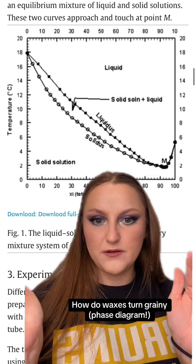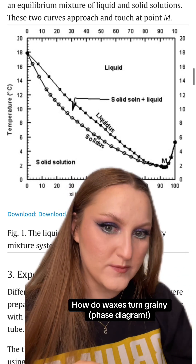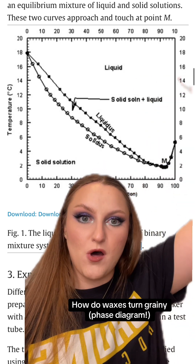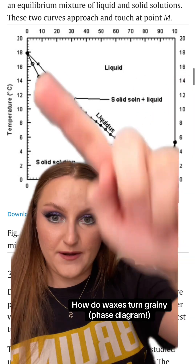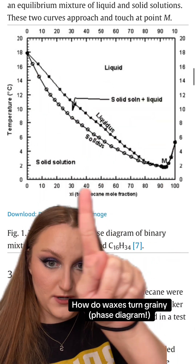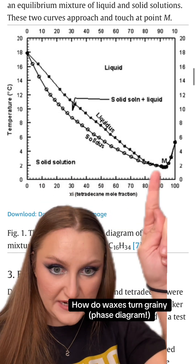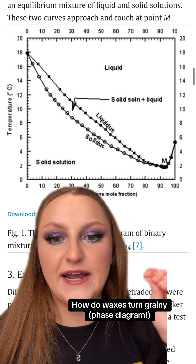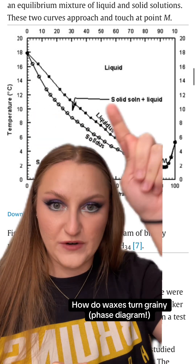Every material or every system of molecules that forms a material has what's known as a phase diagram, where you can plot the temperature over here, and then you can plot the concentration — how much you have percentage-wise — and that is going to give you an idea of when the system will exist as a solid versus a liquid.